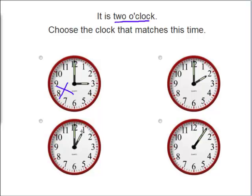This clock says 1 o'clock. That's not right. Oh, here we go. This clock is pointing right at the 2. So it says it is 2 o'clock. This is the right clock.